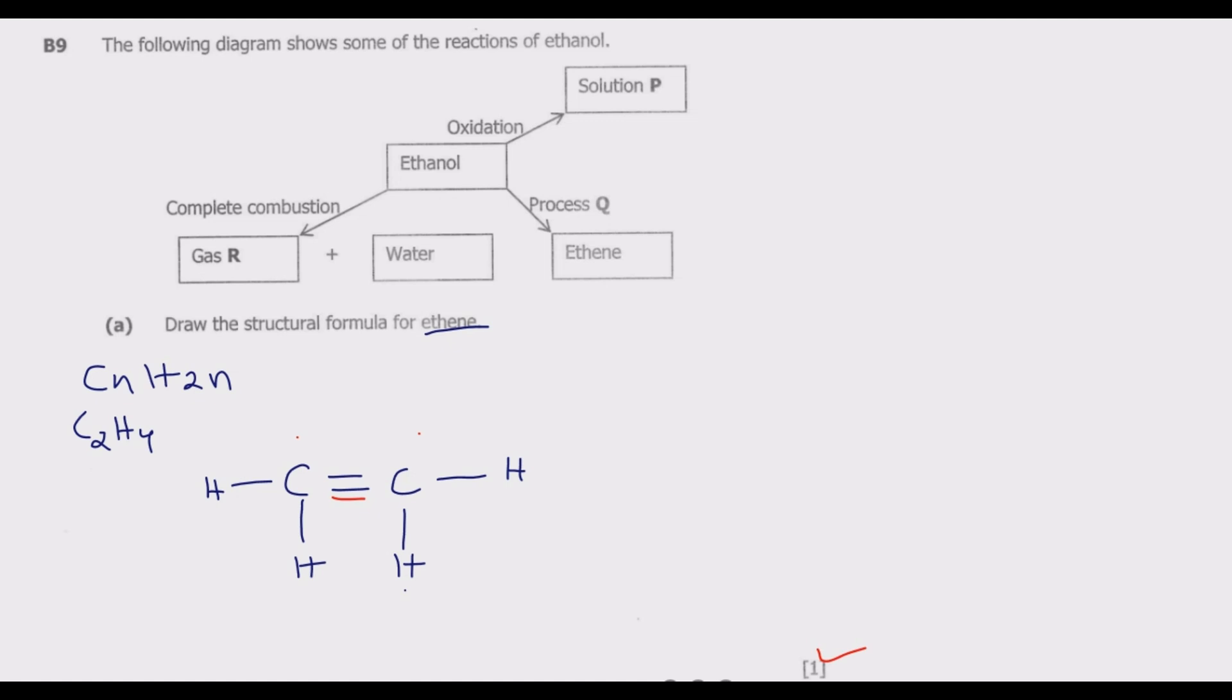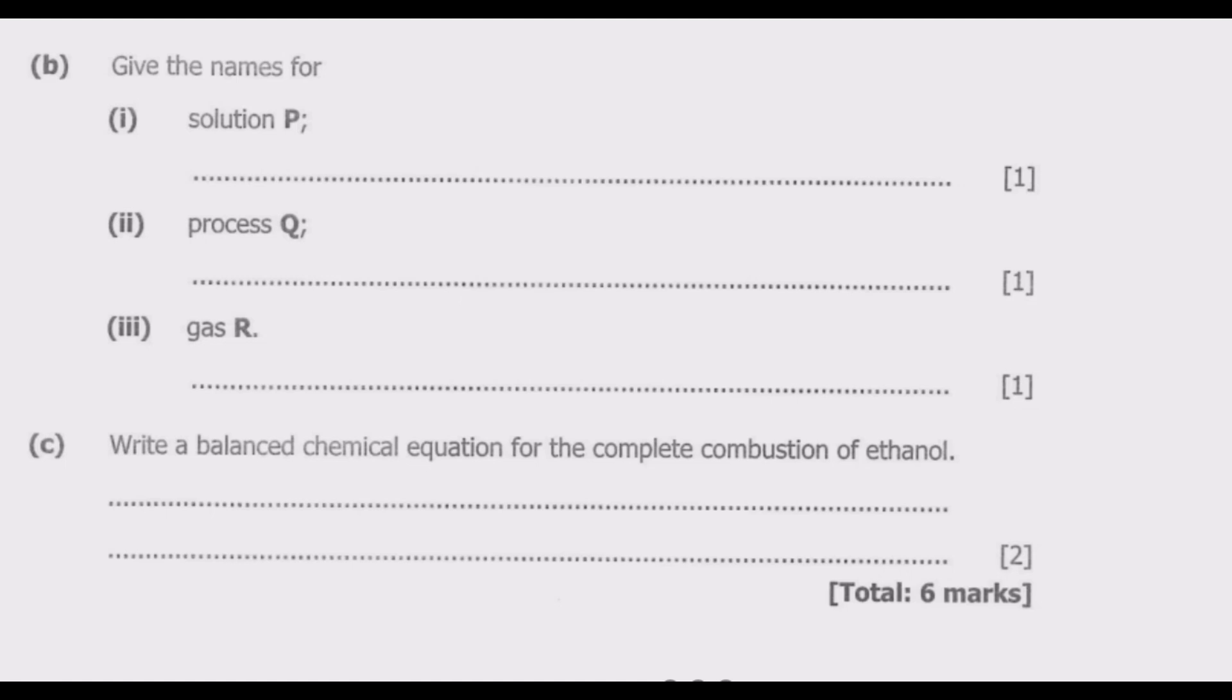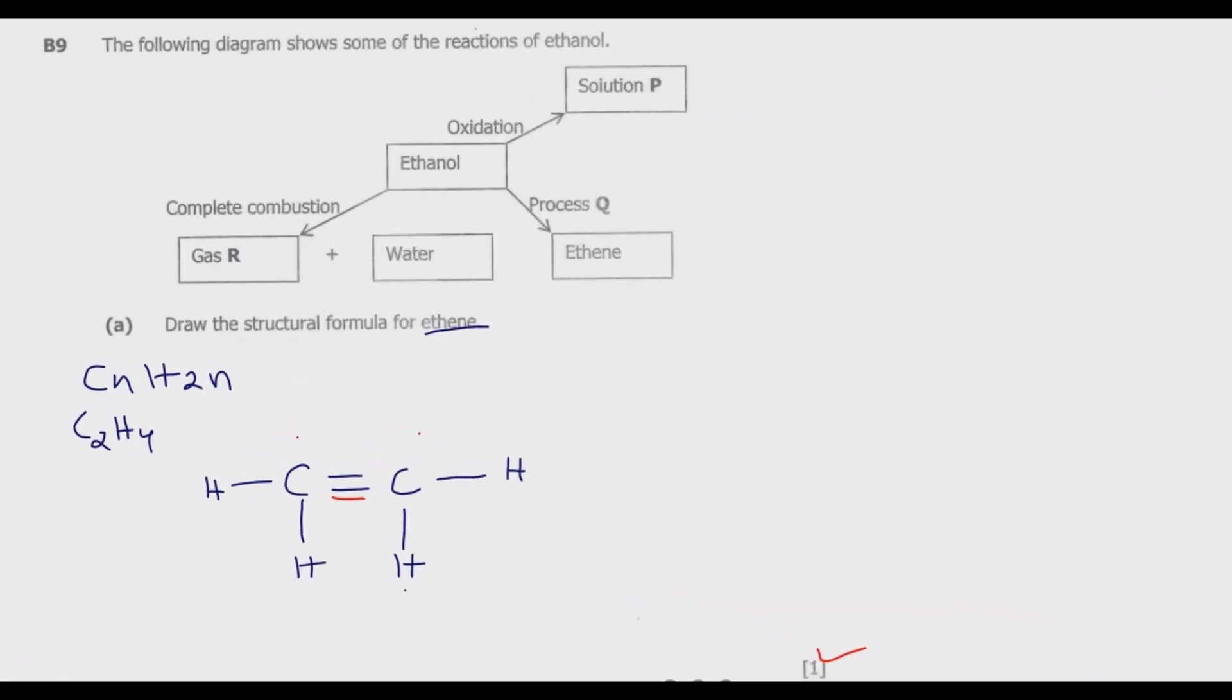Question (b) asks: Give the names for solution P, process Q, and gas R. Looking at solution P, we are doing oxidation. Oxidation is a process by which we convert an alcohol into a carboxylic acid and water. The oxidation reaction looks like this: we start with ethanol, using the structural formula so it's easier to follow.